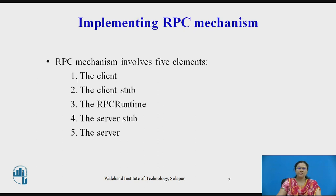Now we will see implementing the RPC mechanism. Here we need 5 elements: first the client, second the client stub, third the RPC runtime, fourth the server stub, and fifth the server. To achieve the goal of semantic transparency, the implementation of RPC mechanism is based on the concept of stubs, which provide perfectly normal local procedure calls.